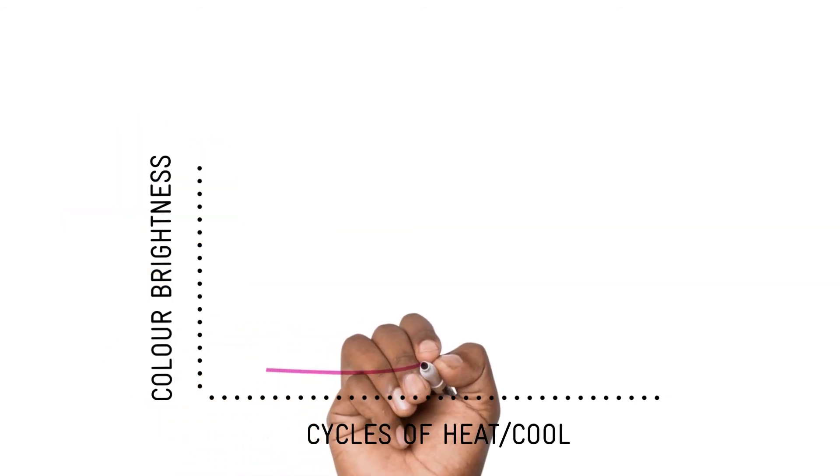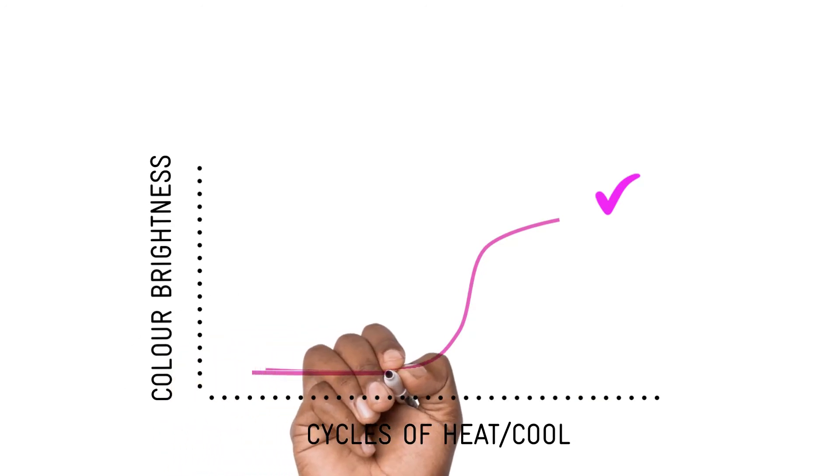So a sample that is positive for the virus of interest gives a signal like this. But a negative sample will give a flat line.